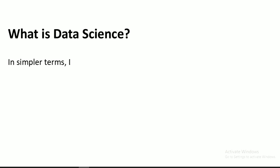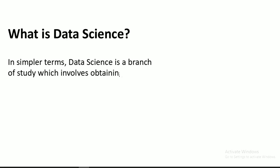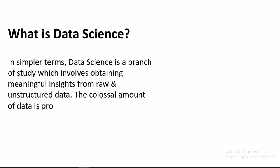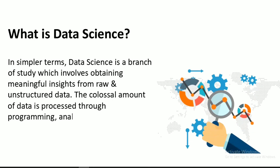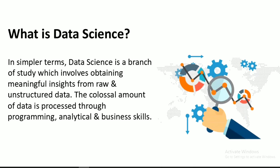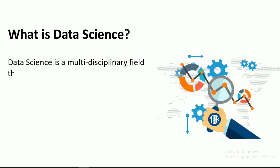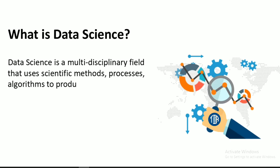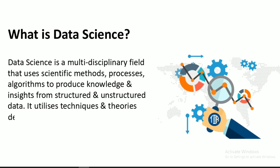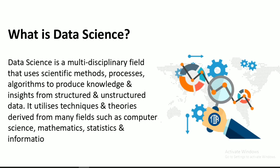What is data science? In simpler terms, data science is a branch of study which involves obtaining meaningful insights from raw and unstructured data. The colossal amount of data is processed through programming, analytical, and business skills. Data science is a multidisciplinary field that uses scientific methods, processes, and algorithms to produce knowledge and insights from structured and unstructured data. It utilizes techniques and theories derived from many fields such as computer science, mathematics, statistics, and information science.